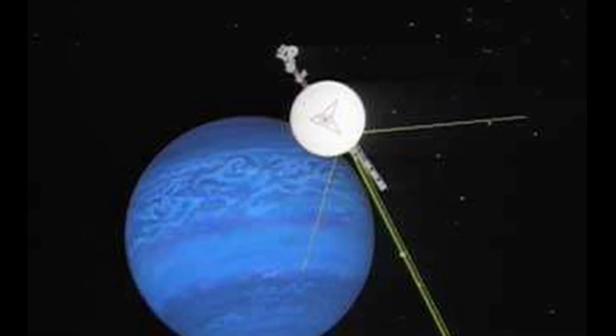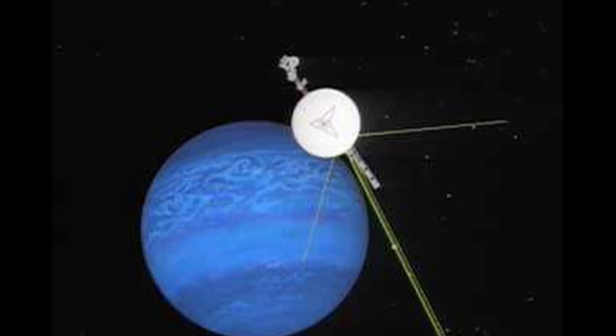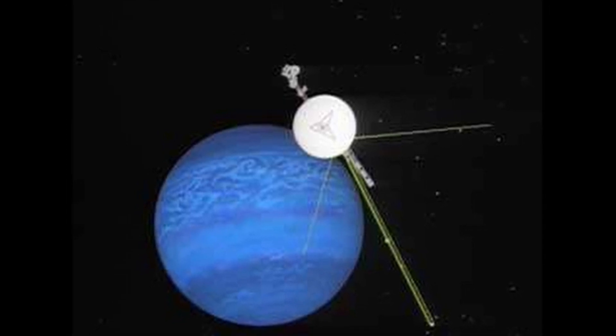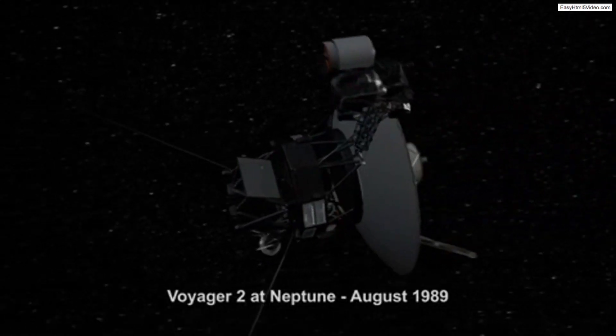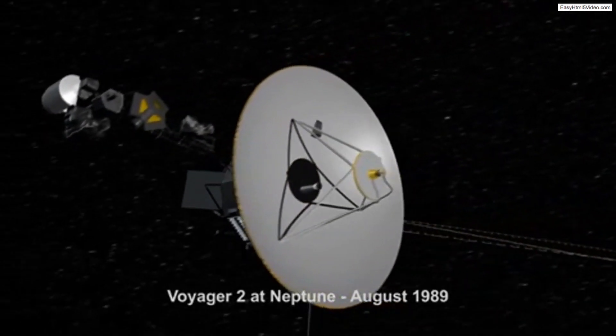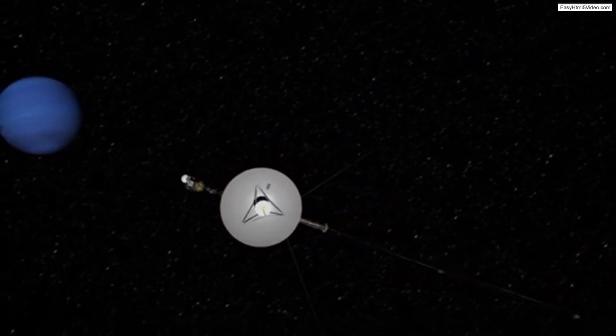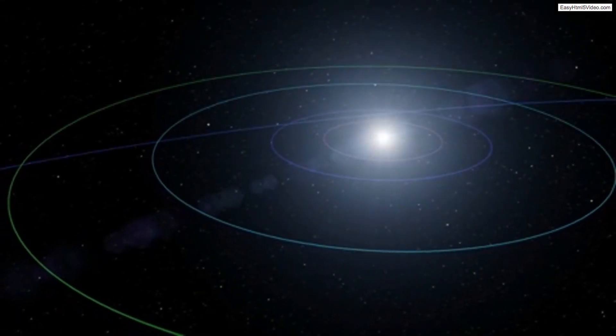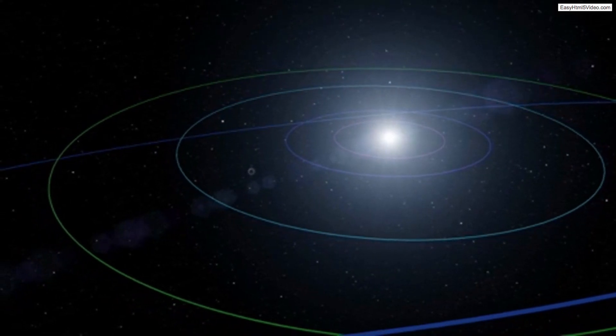Voyager 2 is the only spacecraft to have visited Neptune. No spacecraft has orbited this distant planet to study it at length and up close. It happened in 1989 and captured the first close-up images of the Neptunian system. It took 246 minutes or just over four hours for signals from Voyager 2 to reach back to Earth.